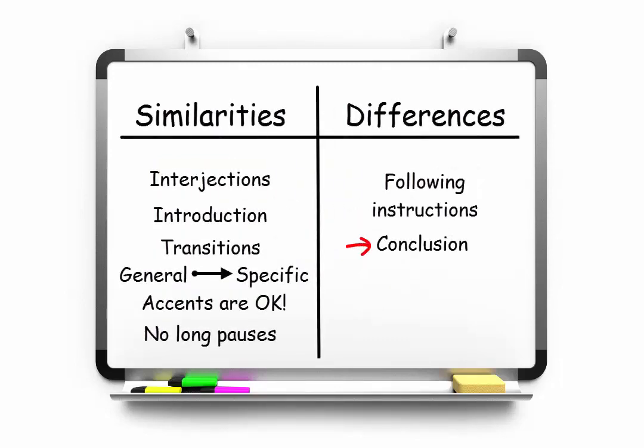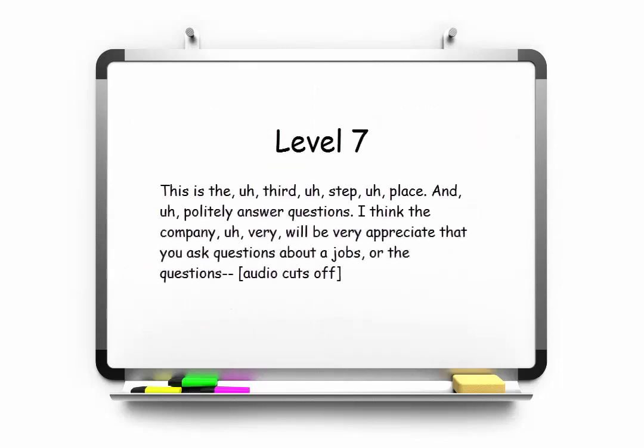Now let's look at how each speaker ends the response. The level 7 speaker doesn't have time to develop a conclusion before the time runs out. It's good to keep an eye on the timer so that you have 5 or 10 seconds left at the end to tie up your response.